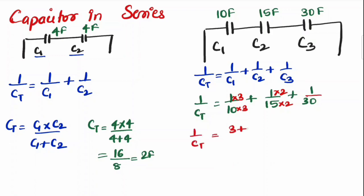So 1 upon CT will be 3 plus 2 plus 1 upon 30, which is nothing but it turns out to be 6 by 30 which is 1 by 5. So if I reciprocate this, CT will be 5 Farad.